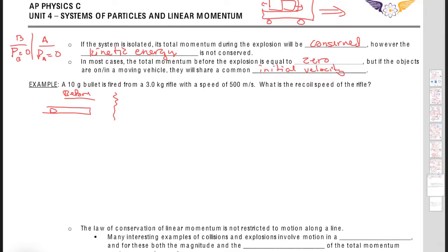We pull the trigger, and what happens? All right, the rifle kicks back and then the bullet comes out moving at 500 meters per second. Okay, so initially the common initial velocity would be zero.